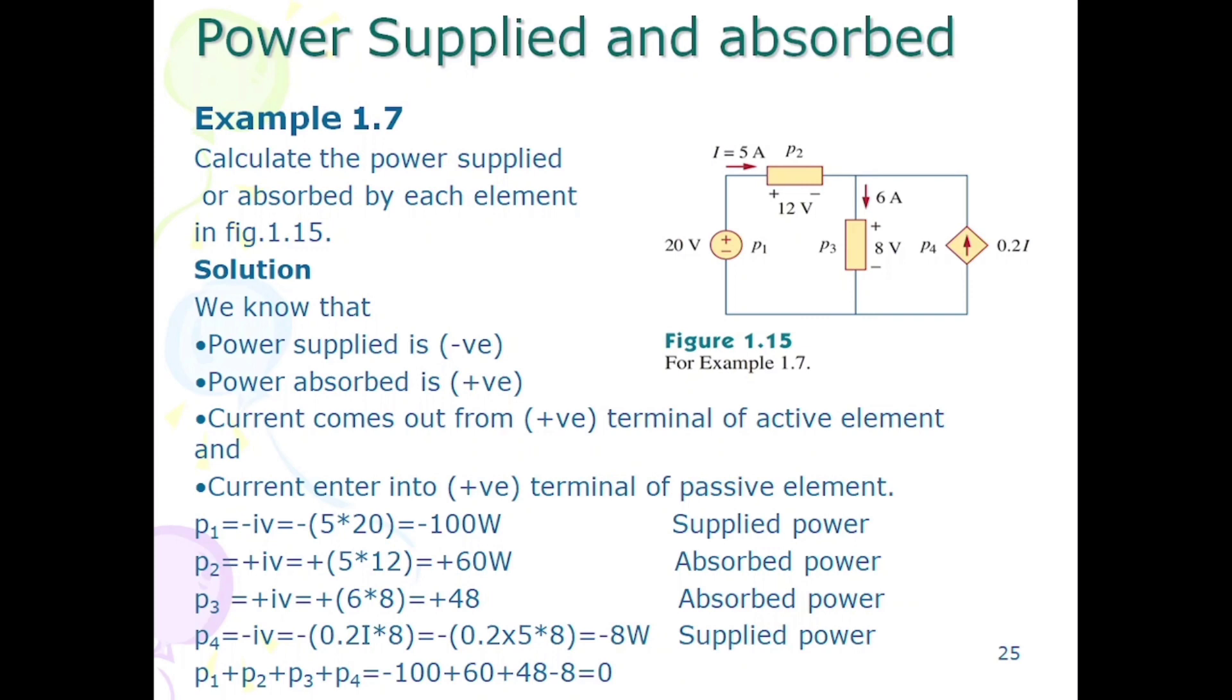Now p2. P2 is a passive element, current is entering to the positive terminal and power absorbed is positive. 5 into 12 is equal to plus 60 watt.